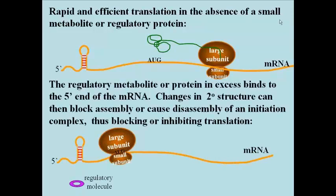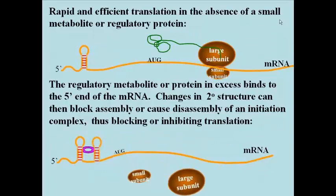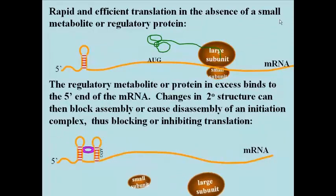Regulatory small metabolites or regulatory proteins, if present in sufficient concentration, recognize and bind to the 5' end structure of the messenger RNA that is trying to be translated. If they bind, assembly of the initiation complex is prevented, or the initiation complex together with its large ribosomal subunit is broken down, aborting translation.